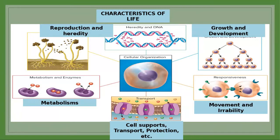The first characteristic is that living things grow and develop. Growing means becoming bigger or taller by adding more cells. Development means that living things — like humans — have cells that also differentiate into different organs: cells that become the liver, the heart, the lungs, etc.